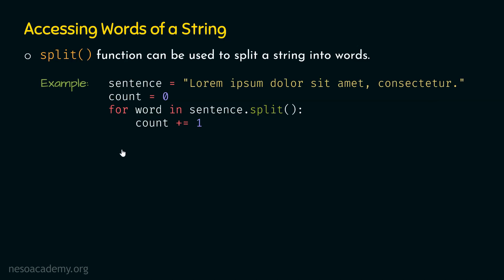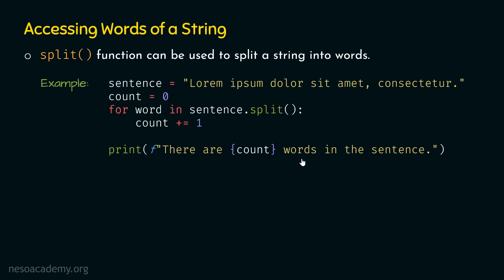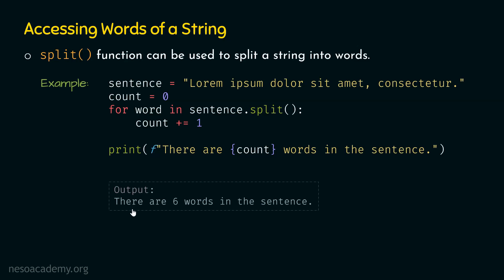After this for loop, we just want to print the count like this: 'There are count words in the sentence.' Here, we are using the f-string. Because of the f-string, we would be able to embed variables within the string. Here, we are embedding the count variable, and at run time, this will be replaced by the value of the count variable. After executing this code, we will get this output: There are six words in this sentence, which is correct.